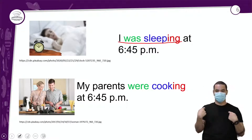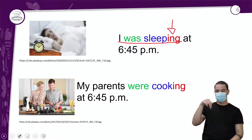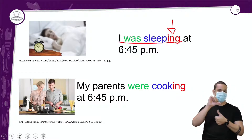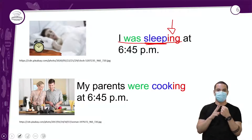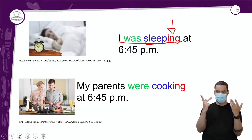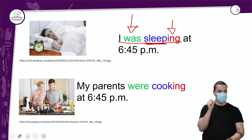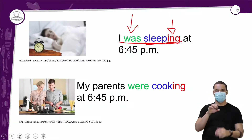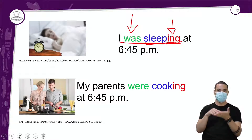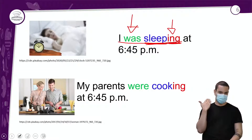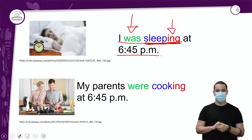Eu preciso prestar atenção no -ING aqui, porque esse -ING faz toda a situação. Ele modifica o meu verbo 'sleep' — dormir. Eu estou falando de uma ação que aconteceu no passado, representado pelo 'was', e uma ação que estava em andamento nesse passado — 'sleeping' — representado pelo ING. Sem o ING, não tem essa ideia de ação em andamento no passado.